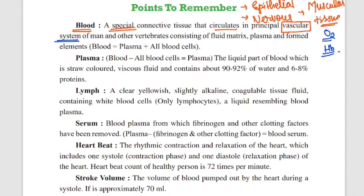In lower organisms, blood does not run in pipes — they do not have a vascular system with vessels. In those organisms, blood stays within the body cavity itself. But in humans it is not like that. In humans there are capillaries — the most complex mechanism exists in organisms like humans. We have a vascular system, and other vertebrates also have a fluid matrix.